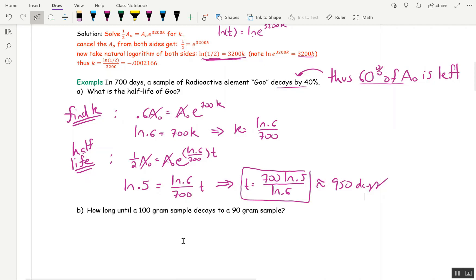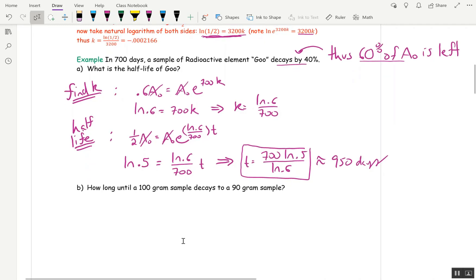How long until a 100 gram sample decays to a 90 gram sample? All right. So we have our formula. A(t) is A₀e. We know what k is. k is ln of 0.6 over 700 times t. So there's our formula. And so we're wanting to solve the equation.